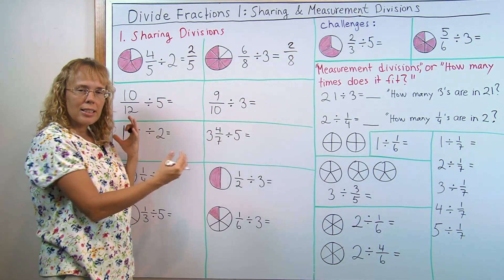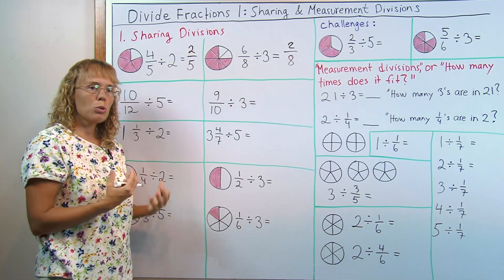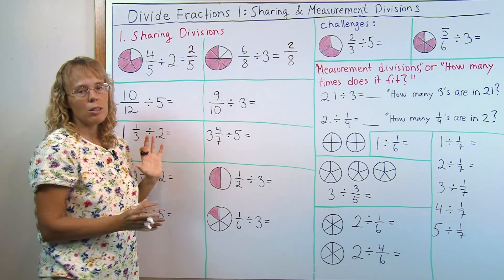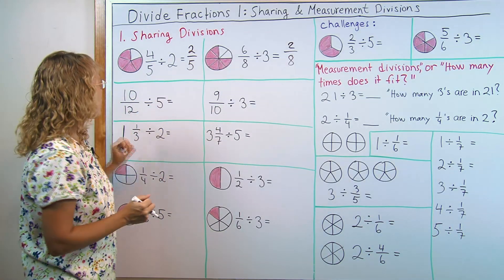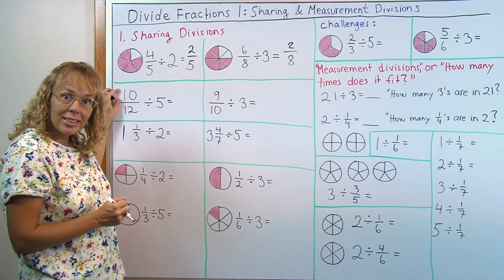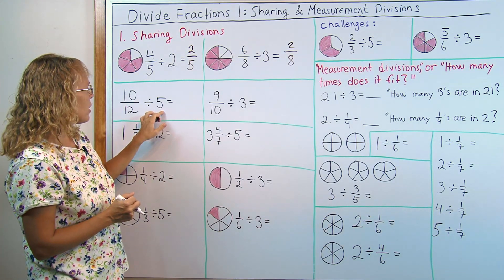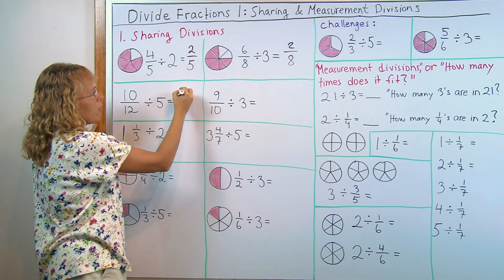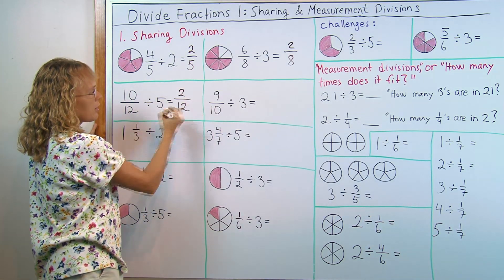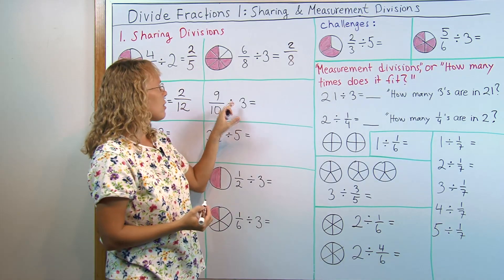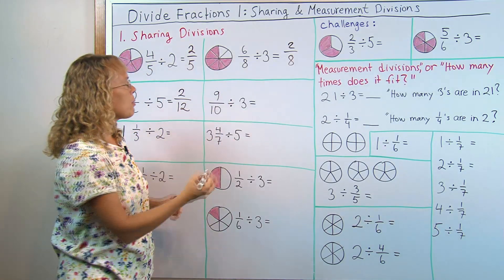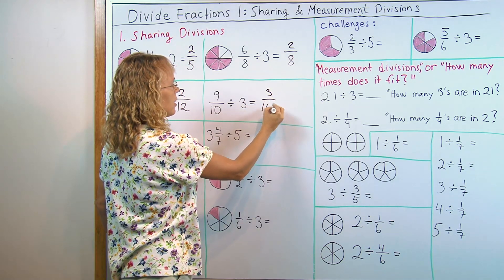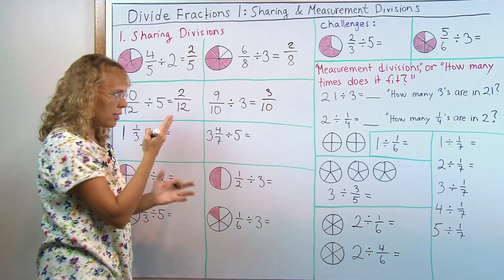And since this is fairly easy, students can soon solve similar problems without a picture to help them. Ten-twelfths divided by five. There's ten slices and then five people are sharing them. So how many slices does each person get? Obviously two slices and they are twelfths. Or similarly nine-tenths divided by three: there's nine slices and three people sharing, so every person gets three slices and they are tenths.